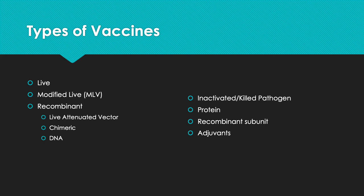For different types of vaccines, I won't go into too much depth since it can get complex, but I want to give you an idea that not every vaccine is the same. There are live vaccines, modified live vaccines, and recombinant vaccines — which include live attenuated vectors, chimeric DNA, inactivated and killed pathogens, protein vaccines, recombinant subunit, and adjuvants. Your killed and inactivated vaccine is a dead, inactivated pathogen. For subunit vaccines, you take a pathogen, fraction it out, and use subunits of that vaccine. I like to think of it as a pop gun versus a real gun — the virus is the real gun with potential to kill, but a subunit vaccine is just a piece of it. It causes an immune response but won't actually harm the animal.